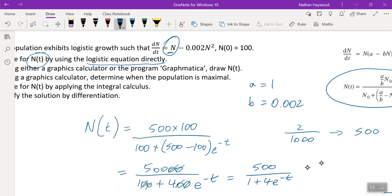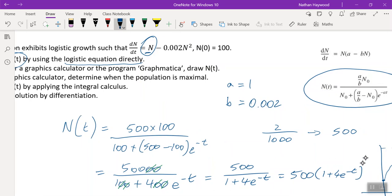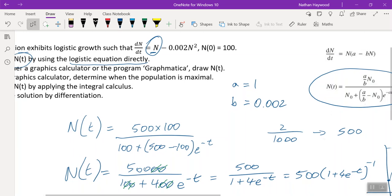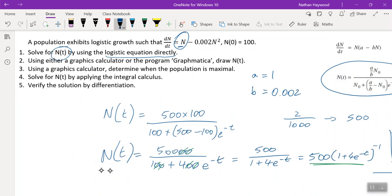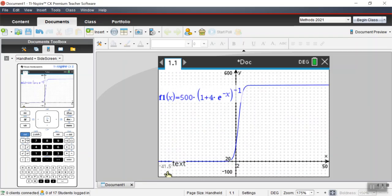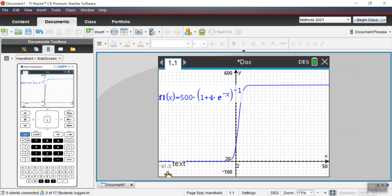And this bottom bit, we can rewrite it as all of it to the power of what? Negative 1. Everything on the bottom of a fraction, you can rewrite on the top of the fraction as negative 1. So let's leave it like that. There is our logistics model. So let's use this as Y. Let's use this as X.